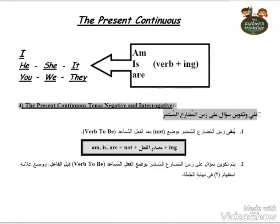Okay, let's move to the grammar. Here we have the present continuous tense. We form it with am, is, or are plus the verb with -ing. I is used with am; he, she, it is used with is; and we, you, they is used with are.